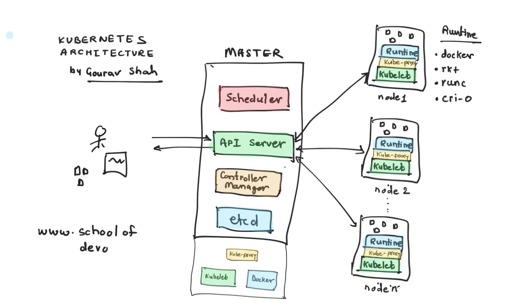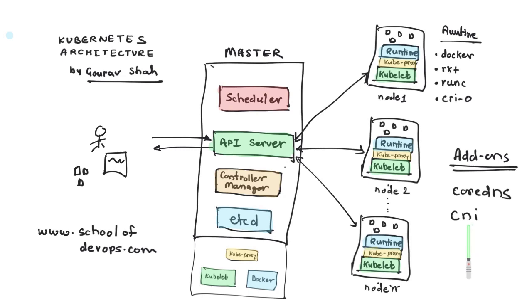In addition to the core components, there are add-ons that have become an essential part of the Kubernetes environment. These include the DNS service, which may run as multiple instances inside your cluster, and the CNI networking plugins needed to network containers running on different nodes — such as Flannel, Weave, and Calico. So in addition to the scheduler, API server, controller manager, and etcd, you will see DNS and networking components as part of the control plane. That's the Kubernetes architecture.